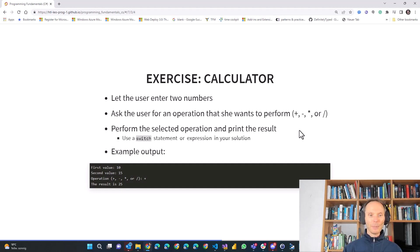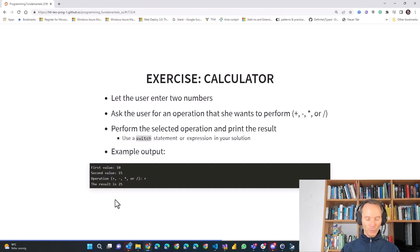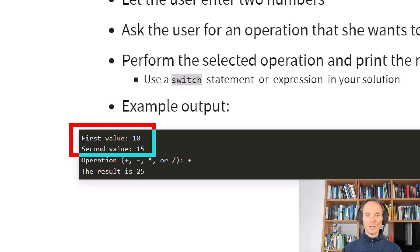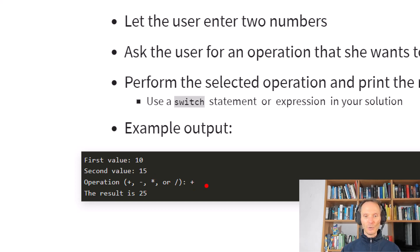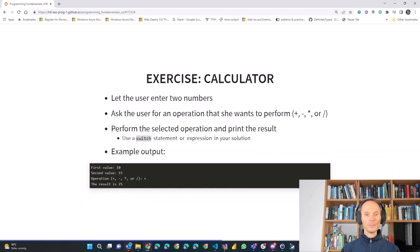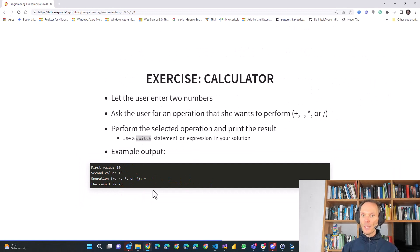To make it even clearer, I've put here an example of the expected output — this is how your program should work. Ask the user for the first value, then the second value, then ask for the operation (plus, minus, star, or division). Then execute your switch statement, calculate the result, and print the result showing the first value, second value, and the operation. Pause the video here and try to implement that calculator.